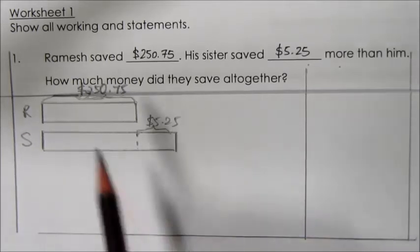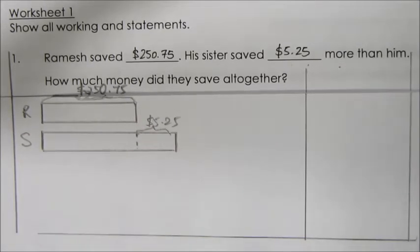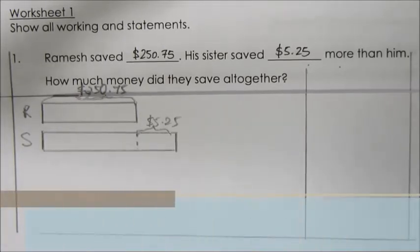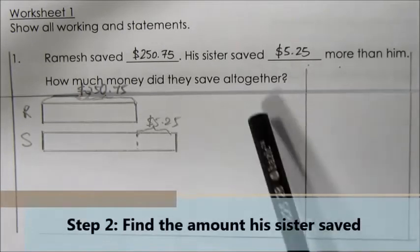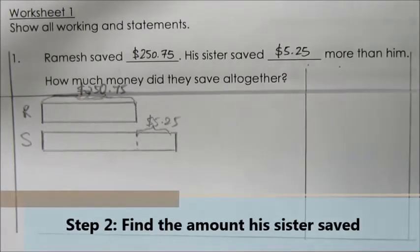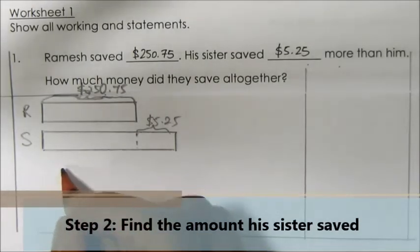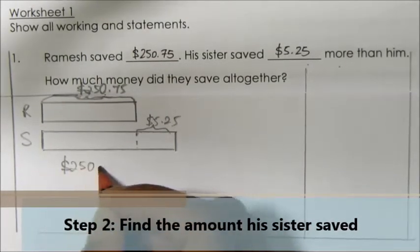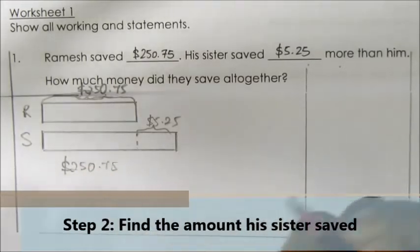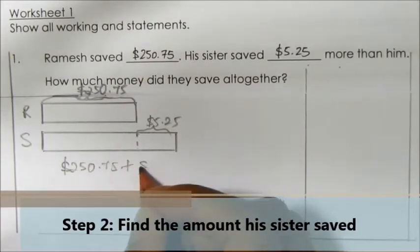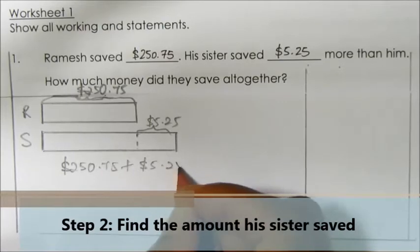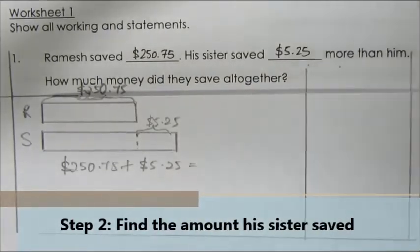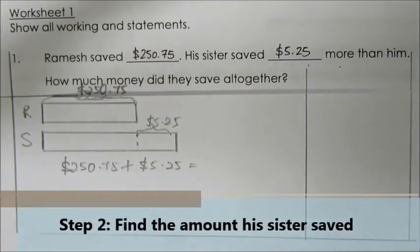Now, how much money did they save altogether? We already know how much Ramesh saved. Now we have to find out how much his sister saved. So let's do the number statement: $250.75 plus $5.25. This will actually give us the amount of money his sister saved.